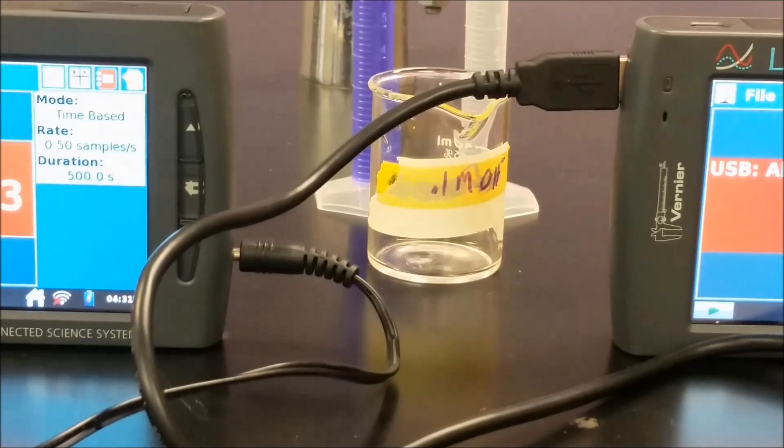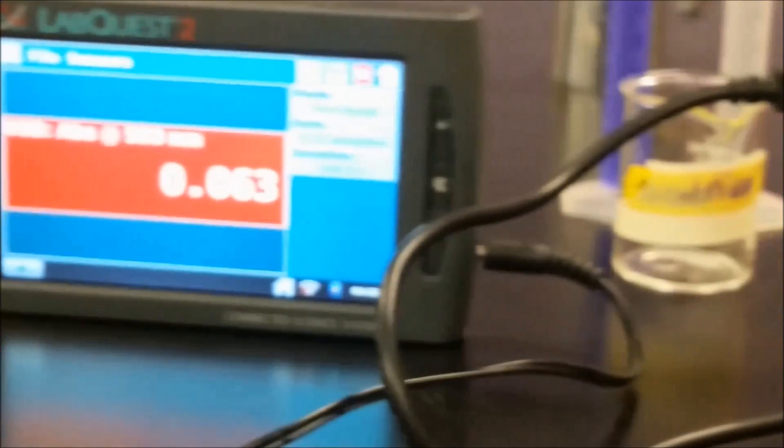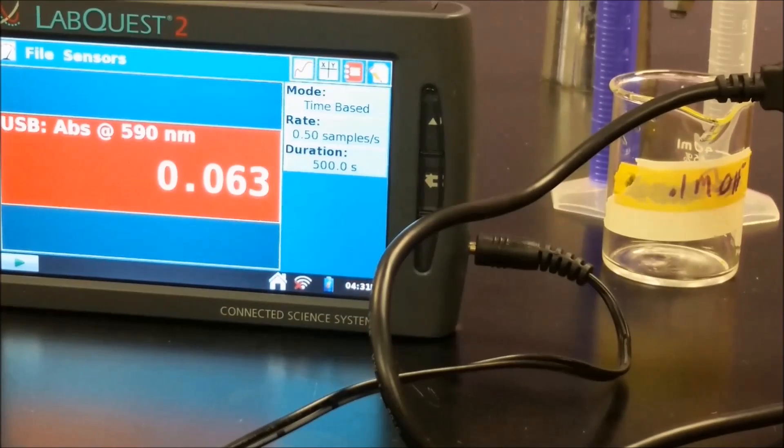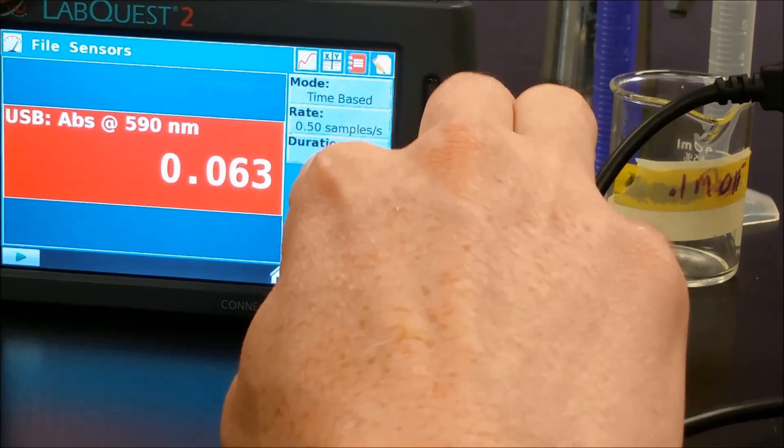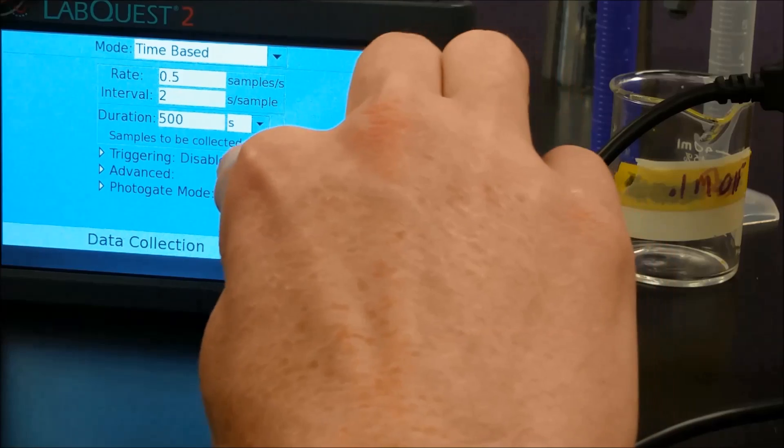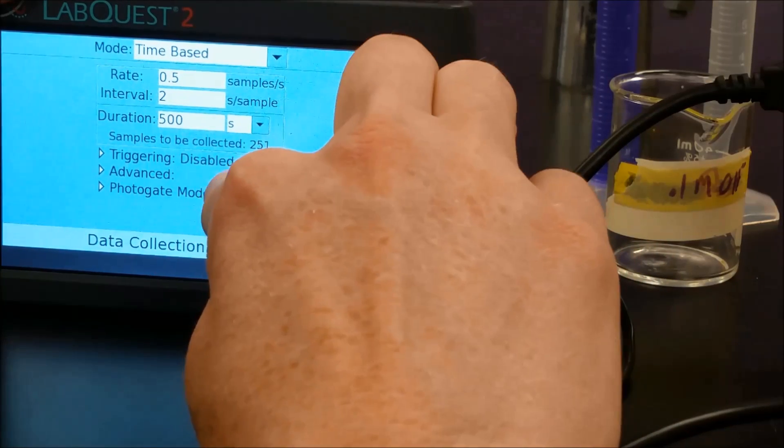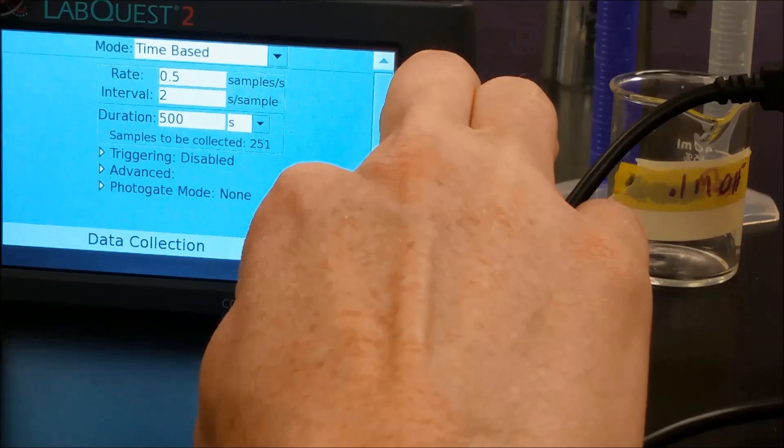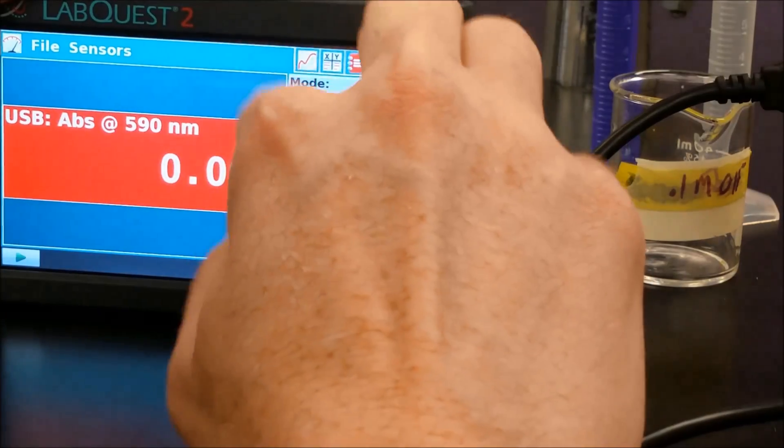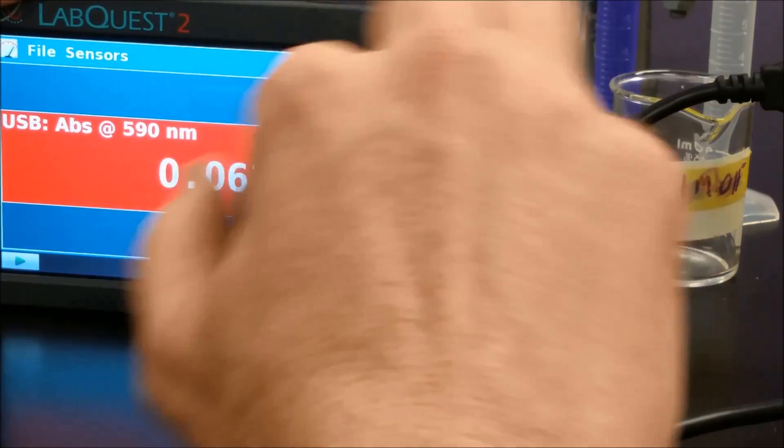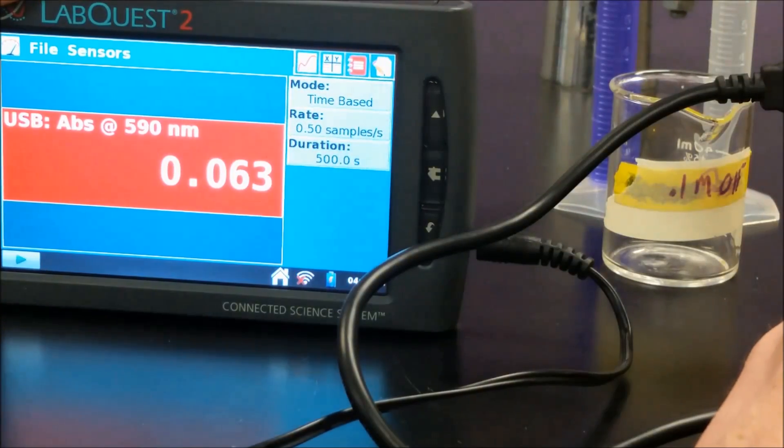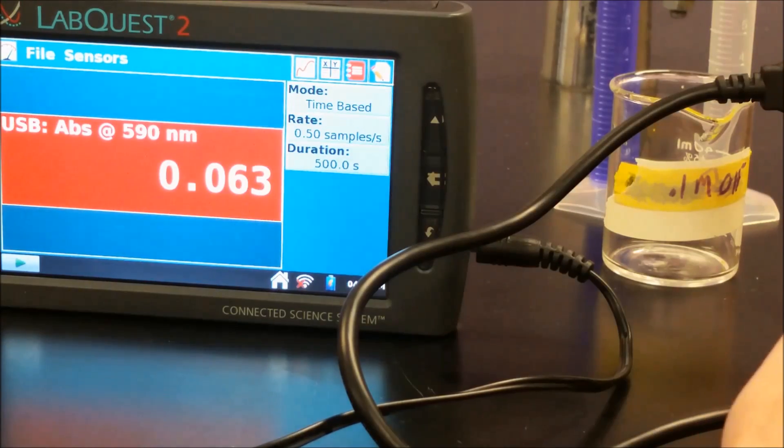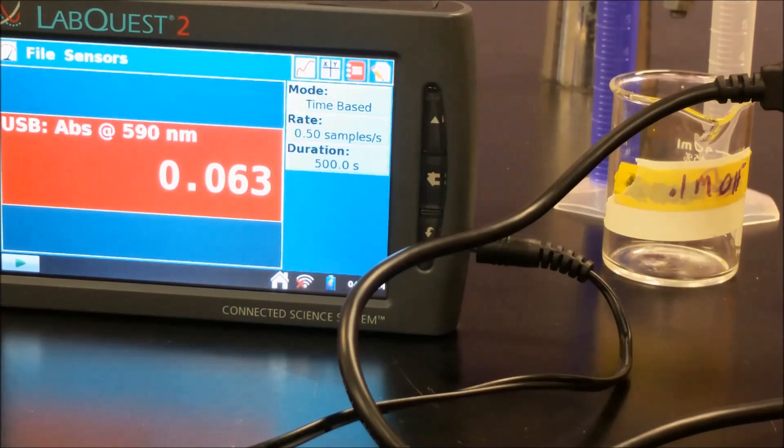Now before we do that, let's go ahead and zoom in on our vernier. So we can make sure that we're on the right setting. So for mode, you want to be under time-based. And then for the duration, you want this to go a little longer than what it usually starts off with. So it usually starts off at 200. So I'm going to change it to 500 because I have a higher concentration. But depending on your initial concentration of hydroxide, if it's lower, you might want to run this for a little bit longer. And then we've changed our wavelength to be the same for both. So they're both at 590 nanometers. And as soon as we hit play, it'll be ready to start collecting data.